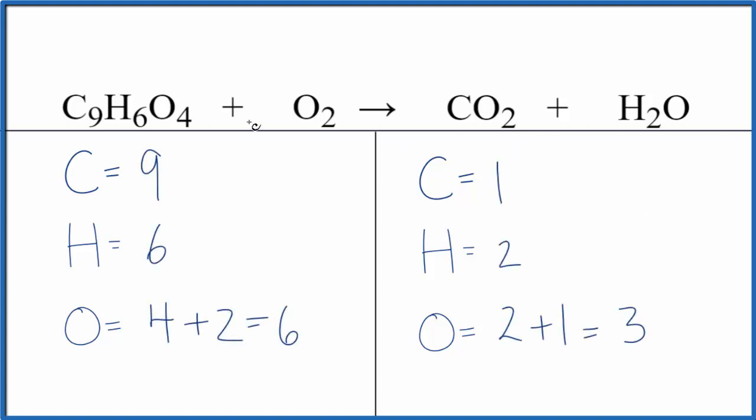The thing to be careful of here is that we have four oxygens here and two here. So four plus two, that gives us six. Product side, we have two oxygens and then one with water. Two plus one is three. So make sure you count the oxygens up correctly.